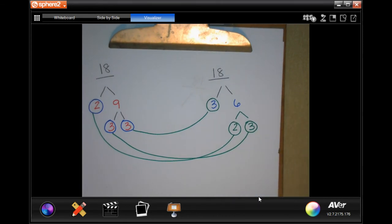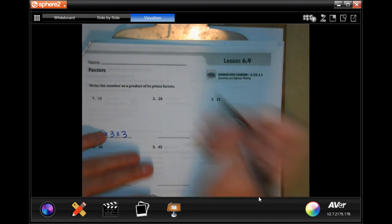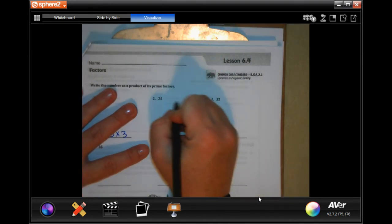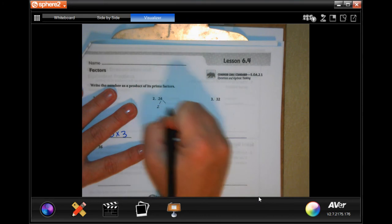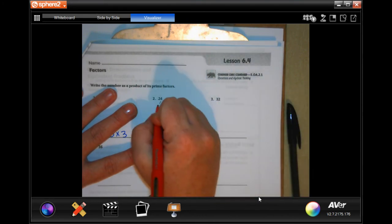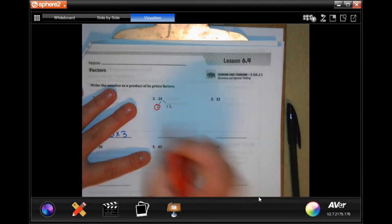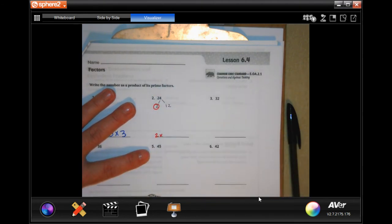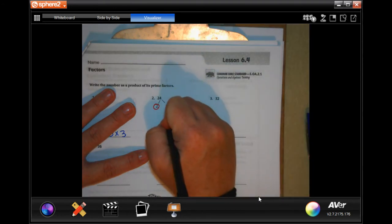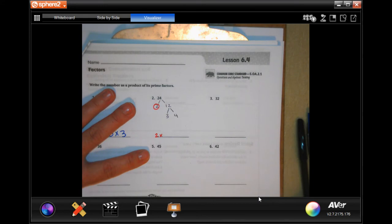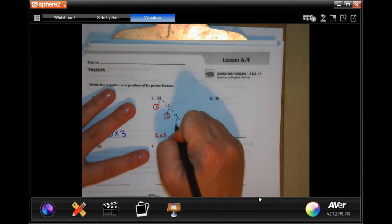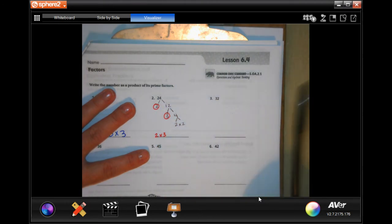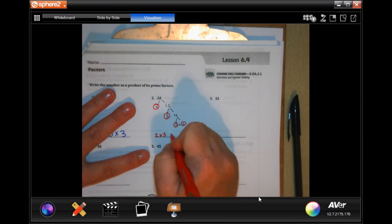The next one, I'm going to go ahead and do 24. I'm going to do two times 12. Well, two is prime. So my first number here is going to be two. Now I'm going to do 12 is three times four. Three is prime. Four is two times two. And both of those are prime.